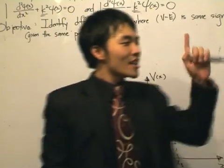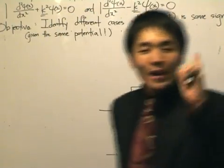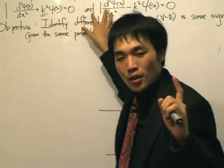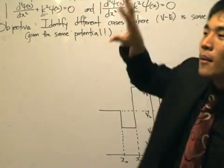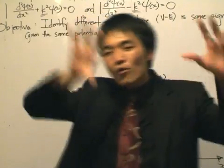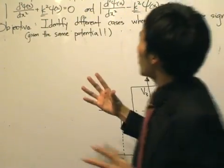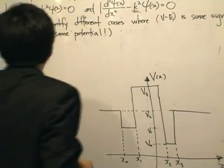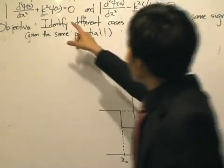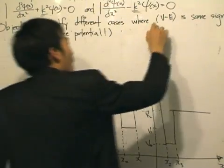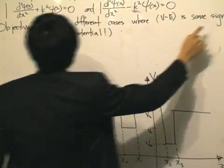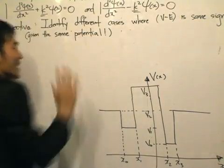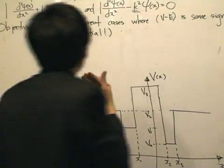The thing is, we need to develop a method for deciding which solution we are going to use. You can anticipate that we'll rearrange the potential and the energy to take one of these forms, but how do we know which solution to use? The objective is to identify different cases where V minus E is of the same sign, given the same potential. This is really a statement that we need to take some time to think about.